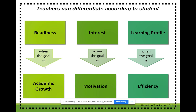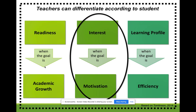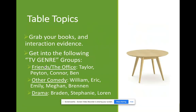That's when we can differentiate for interest — the goal is to give students something that can motivate them, something they want to do. I want to show you a couple of interest-based things. One example: I started off the year looking at student surveys and putting you into table topic groups — we had TV genre groups. If you're wondering about Brennan, that's when he had the plague and couldn't join us, but he would have been in this group.